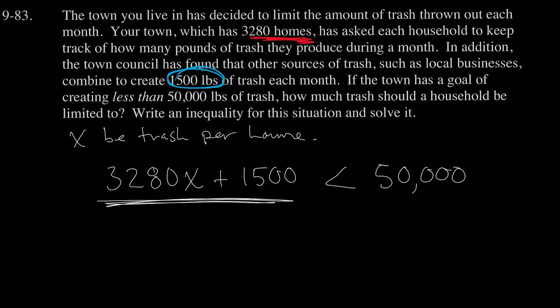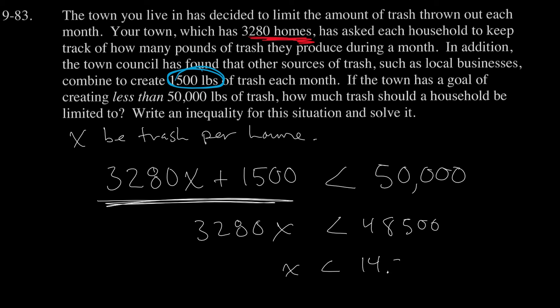If I was going to solve that, I'd take 50,000 and subtract from it 1,500, and we get 48,500. Now we've just got the 3,280x on this side. And if I divide both sides by 3,280, I get that x is less than — this is an approximation — I'm going to round it to the nearest tenth of a pound: 14.8 pounds.